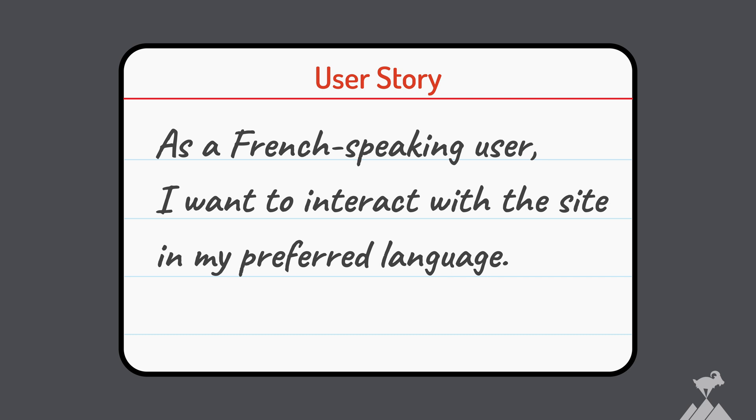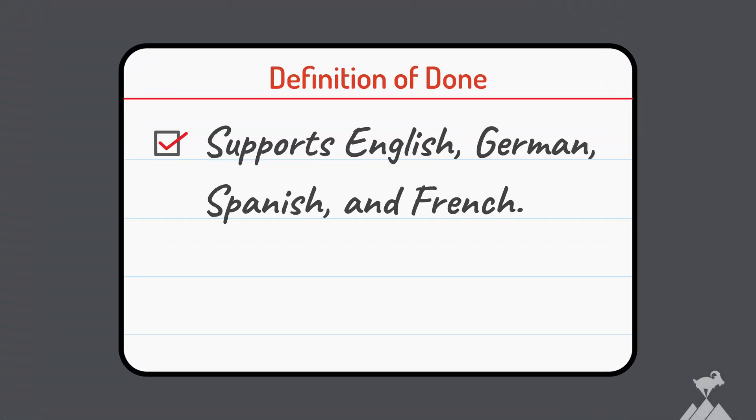Another example: maybe you support English, German, and Spanish, and you want to add French. You begin with a story — 'As a French-speaking user, I want to interact with the site in my preferred language.' Again, as it becomes a priority, it's worked on and finished. Then you update your definition of done to say: supports English, German, Spanish, and French. This approach works because it enables adding support for new non-functional requirements to a product, but also helps a team remember the ones they need to continue supporting.